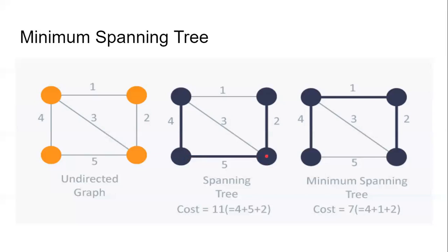Another spanning tree that could be drawn includes the line from here up and around, including all four vertices. Notice there are some edges that are omitted. The idea is to ensure that the tree consists of all the vertices in the graph. This one has all the vertices: one, two, three, four. Once all the vertices are included and there are no cycles — for example, if we had included an extra edge, there would be a cycle, because we could start here, go up, come down, and come back. So in drawing your spanning tree, there should be no cycle.